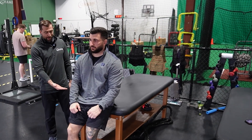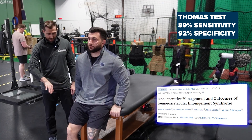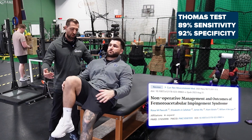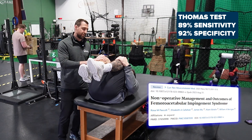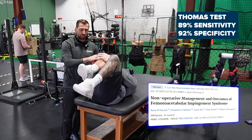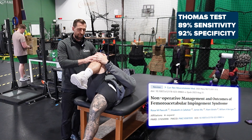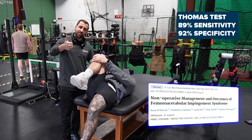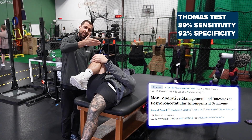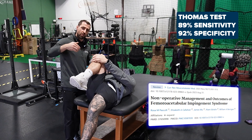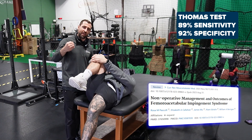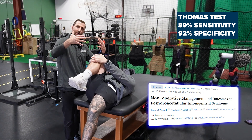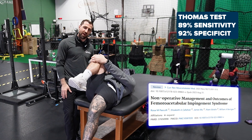Thomas test: have Kyle on the edge of the table with the butt slightly off the edge. Lay all the way back and grab onto both knees. From here, hug one knee and let the other leg go all the way down toward the floor. If this reproduces the patient's familiar symptoms, that's a positive special test. The FADER test compresses the hip joint, creating symptoms, while the Thomas test stretches the hip joint. If you have anterior labral pathology, the Thomas test position will pull that tear apart, which is why it's a good test for labral pathology.